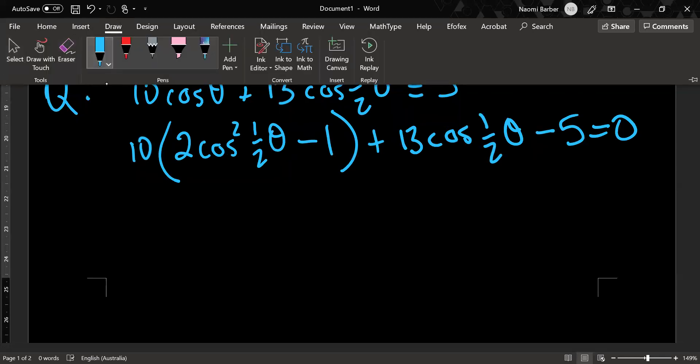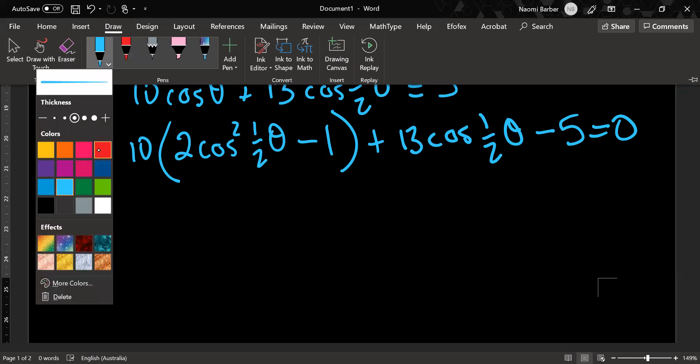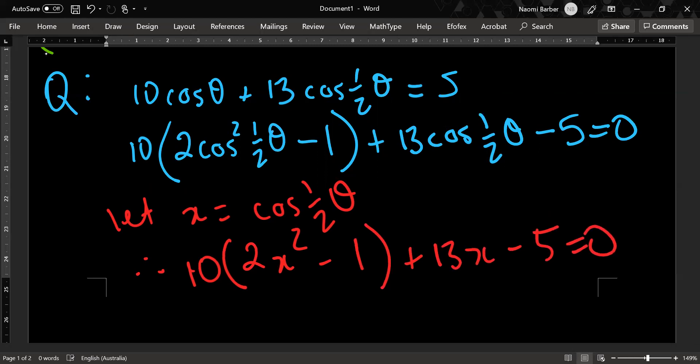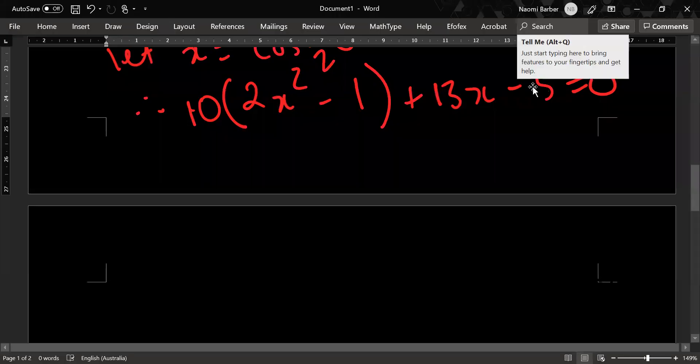I need to let x equal cos half theta obviously. So here we go. Let x equal cos half theta. Therefore, I have 10 times (2x squared minus 1) plus 13x minus 5 equals 0. And that's where I'm up to in my wonderful question.